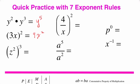Next we have what's called power to a power. z squared quantity cubed — we actually multiply the exponents: z to the two times three, or z to the sixth. Next we have a couple quotient rules. The first one is quotient to a power. What you do is apply that power to the numerator and apply it to the denominator. So four squared is 16 over x squared.